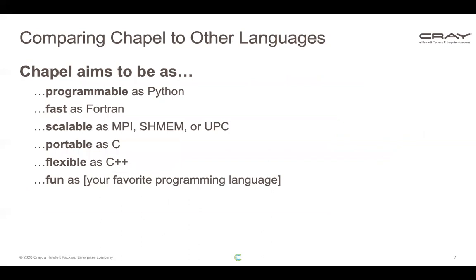Another way to think about Chapel is to compare it to other languages. We're trying to create a language that's as programmable as Python — as easy to read and write — yet delivers scalar code as fast as Fortran, scales to large systems as well as MPI, SHMEM, or UPC, and is as portable as C, basically running anywhere. It should also be as flexible as C++ in terms of creating your own types, operator overloads, and extending the language within itself.